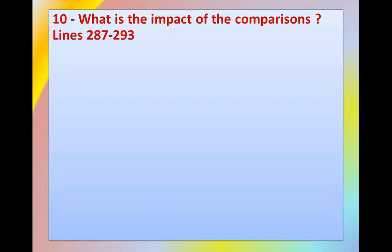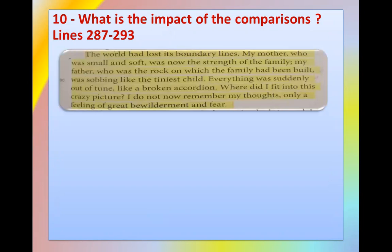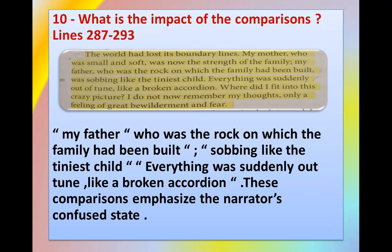What is the impact of the comparisons found between lines 287 to 293? The comparison — 'my father was the rock on which the family had been built, yet sobbing like the tiniest child' — and 'everything was suddenly out of tune like a broken accordion' — these comparisons emphasize the narrator's confused state, as she refers to 'only a feeling of great bewilderment and fear.'